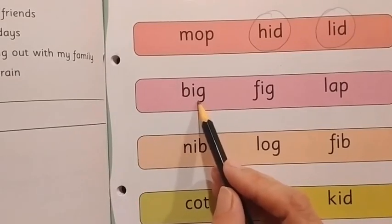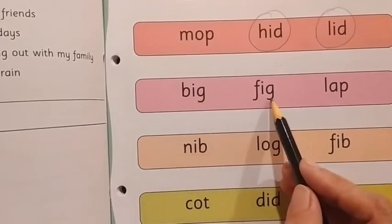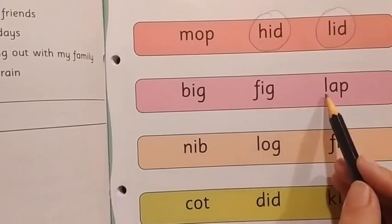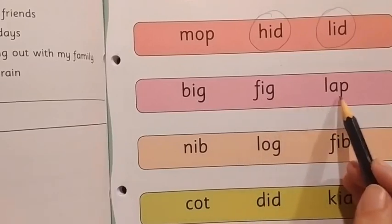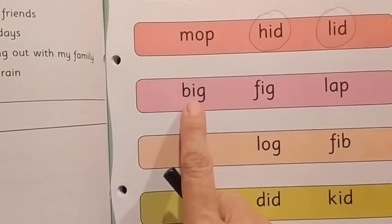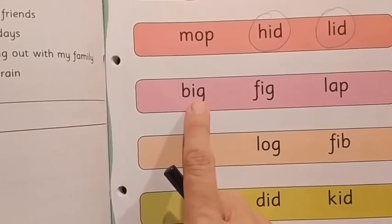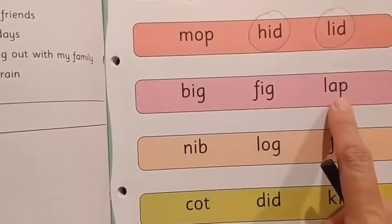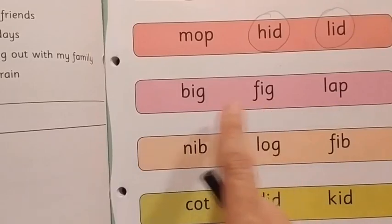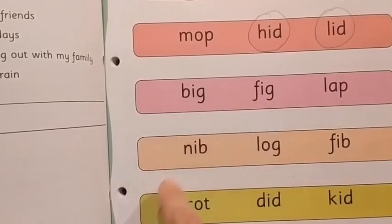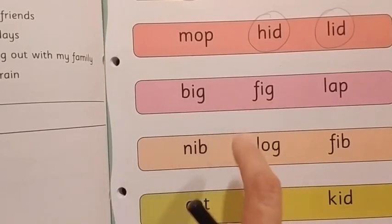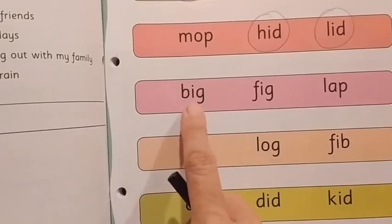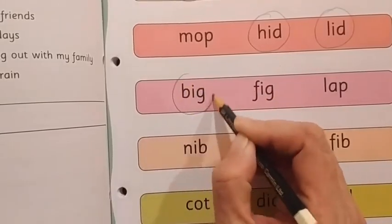Let's move on to the next one. B-O-I-G, Big. F-O-G-I-G, Fig. L-E-A-P, Lap. Let us see the last two letters. Sounds 'ig'. Sounds 'ig'. Sounds 'ap'. So which two words can be the rhyming words, where the last two letters sound the same? It's Big and Fig. So we are going to circle them.